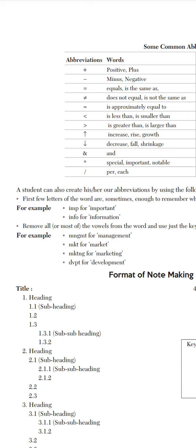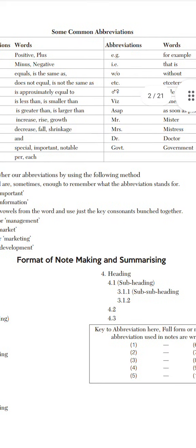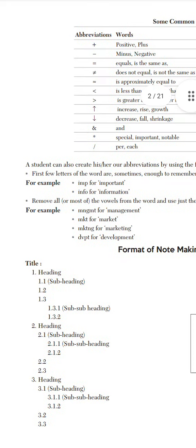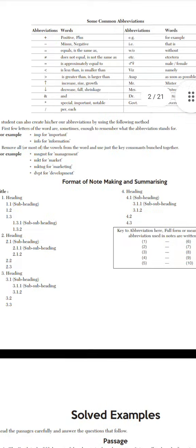Remove all or almost all of the vowels from the word and use just the key consonants together. For example, management becomes 'mngmt', market becomes 'mkt', marketing becomes 'mktng', and development becomes 'dvpt'. This is the abbreviation technique that you need to remember.